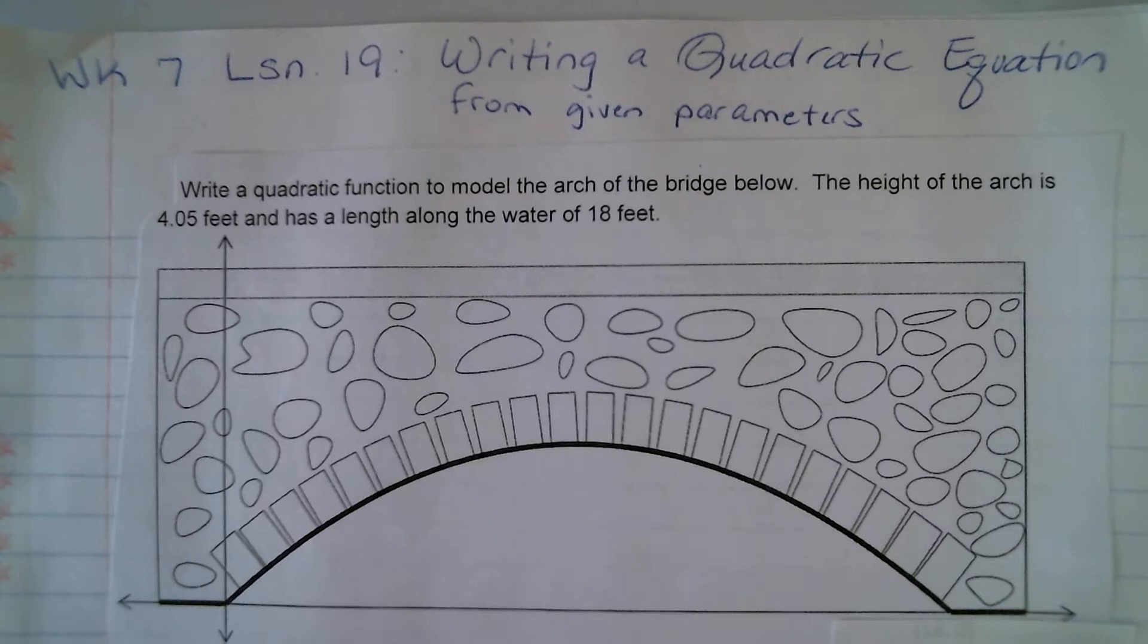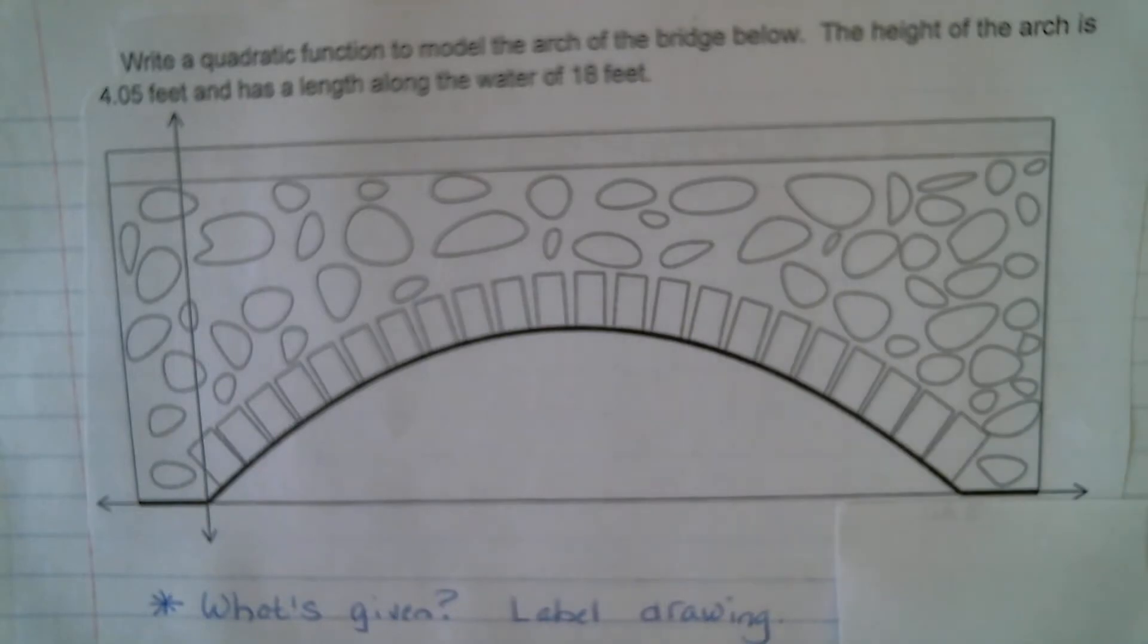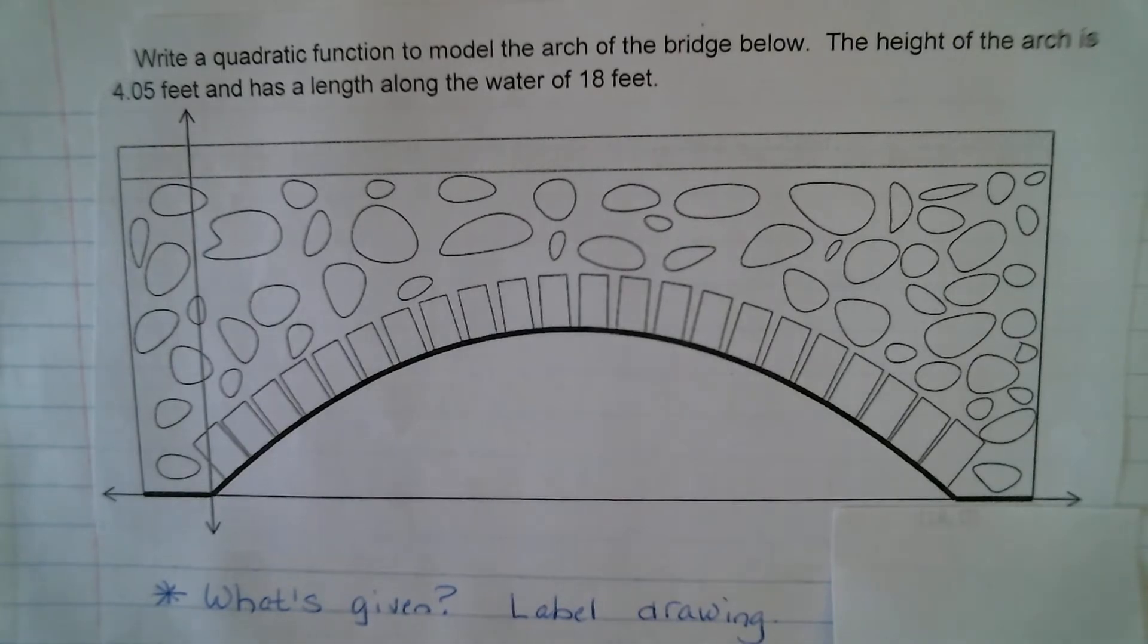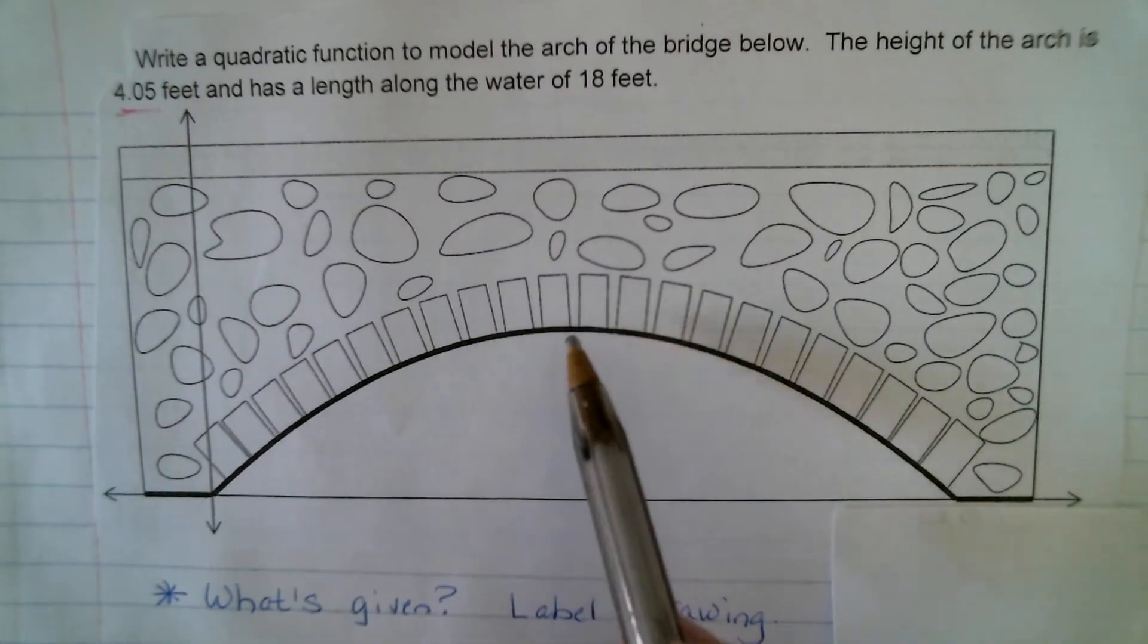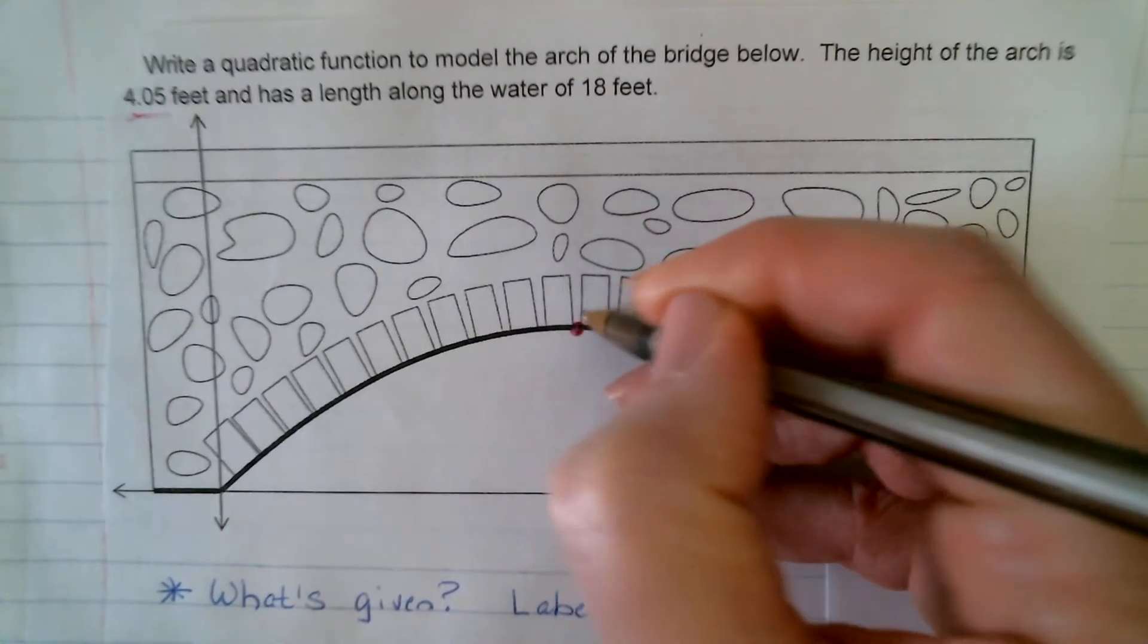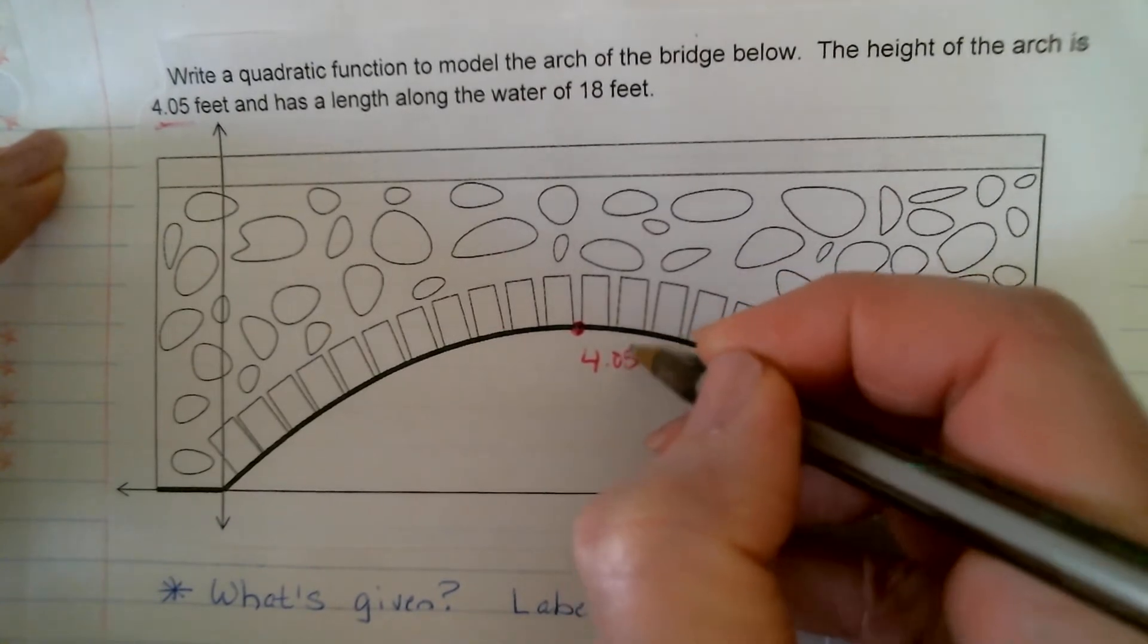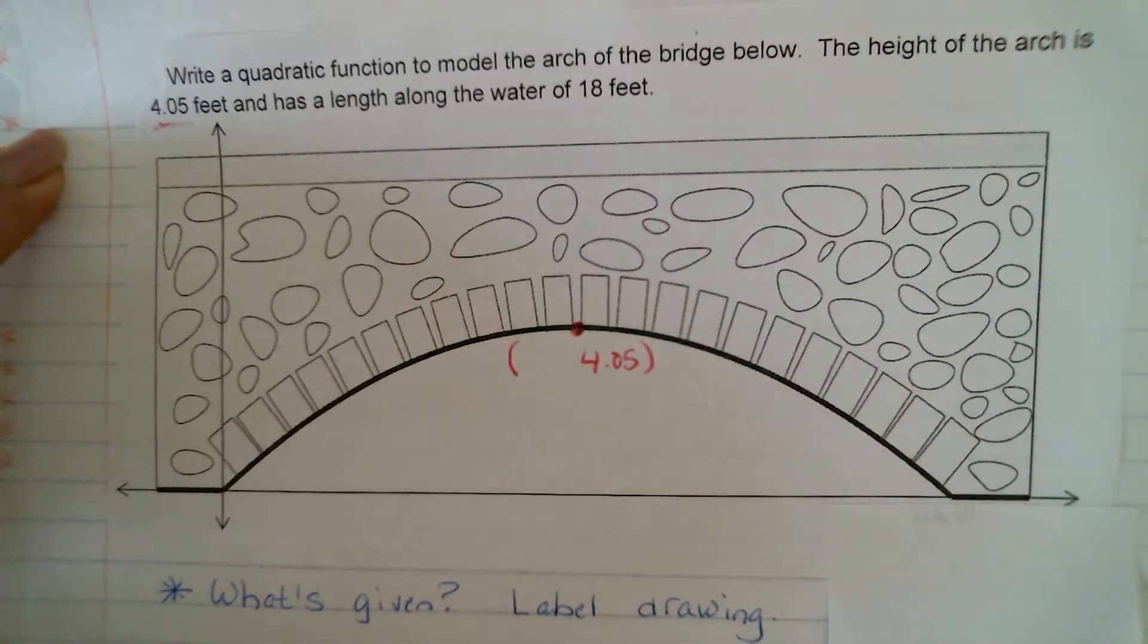So, what was given, and where can we draw it on our sketch here? So, 4.05 feet, we're saying is the height of the arch, okay? So, that's that maximum point right here, somewhere about right here, okay? And, that's going to be the y value that's provided for us, right? So, 4.05. The x value they didn't give me, so, we're going to touch back on that in just a minute.